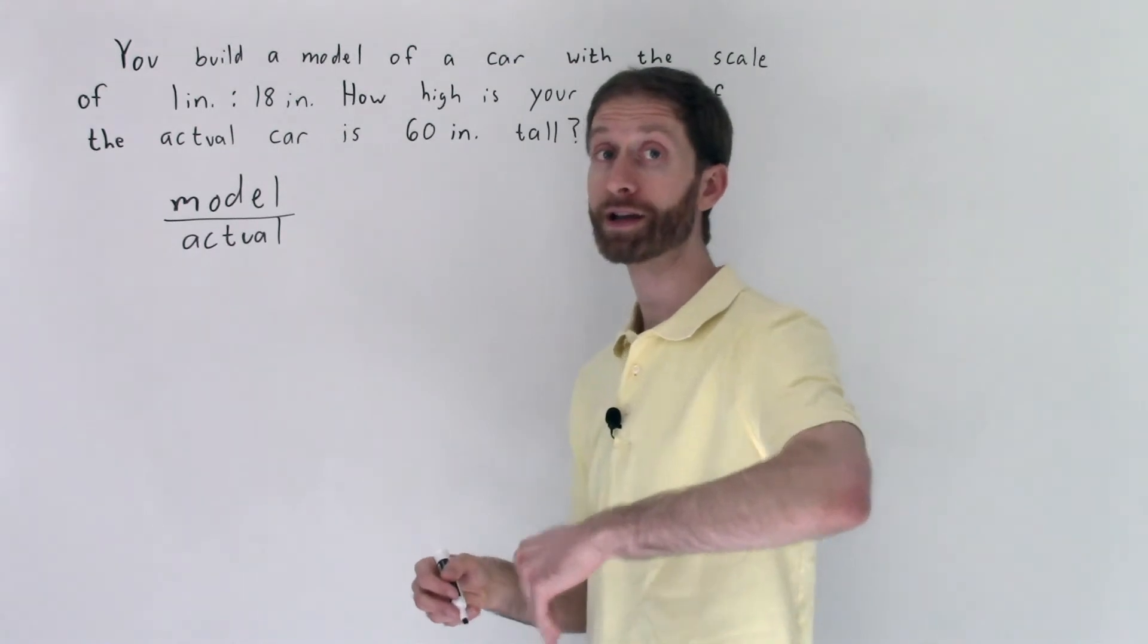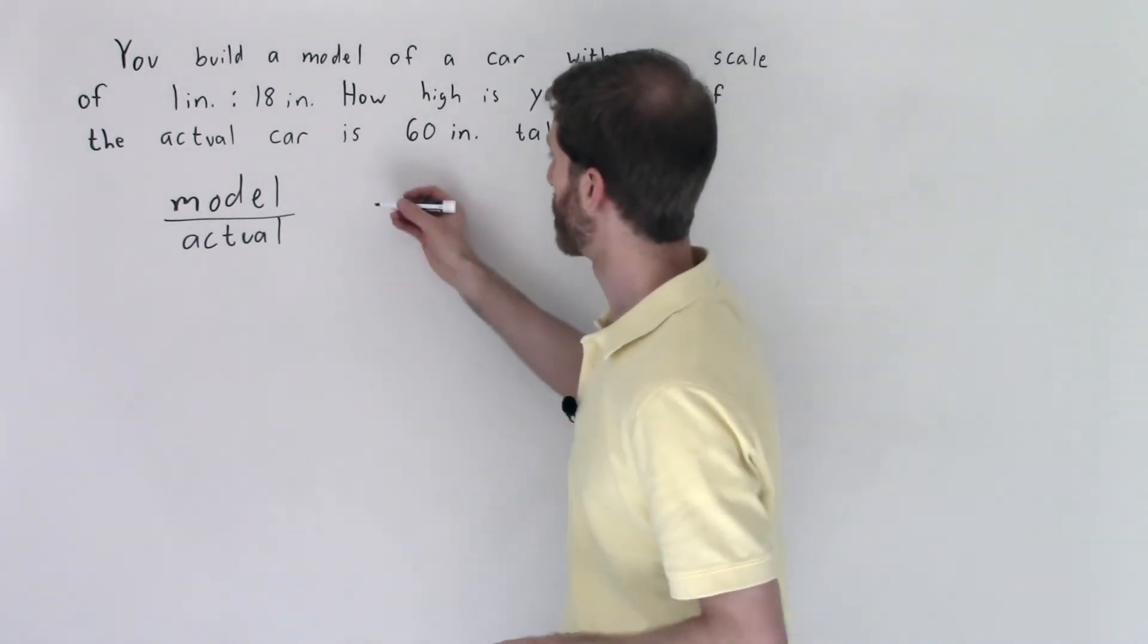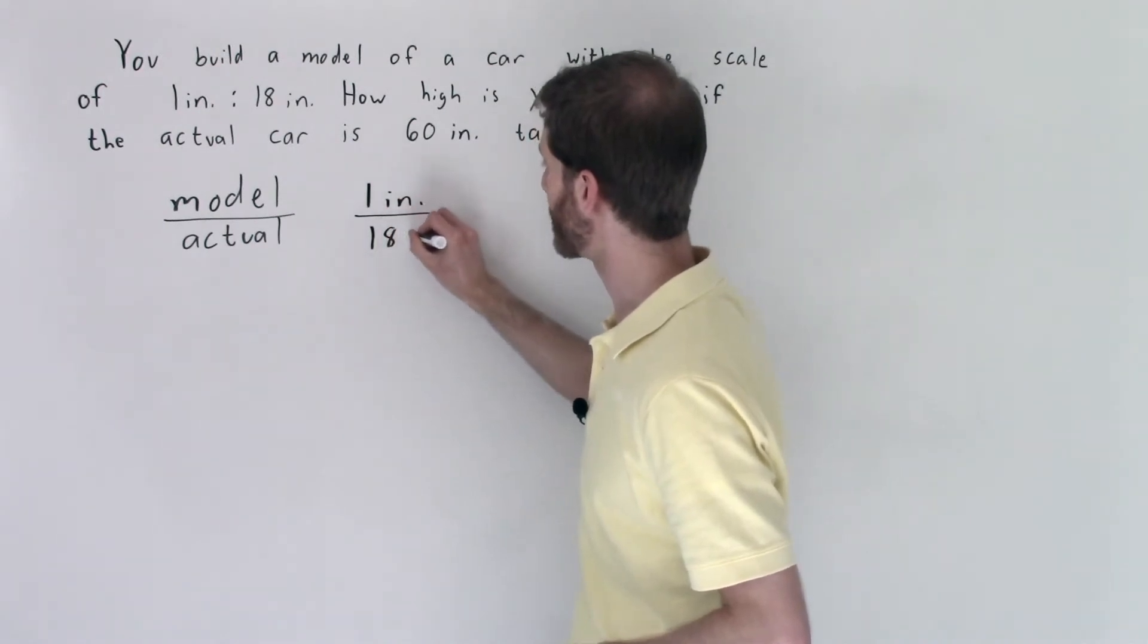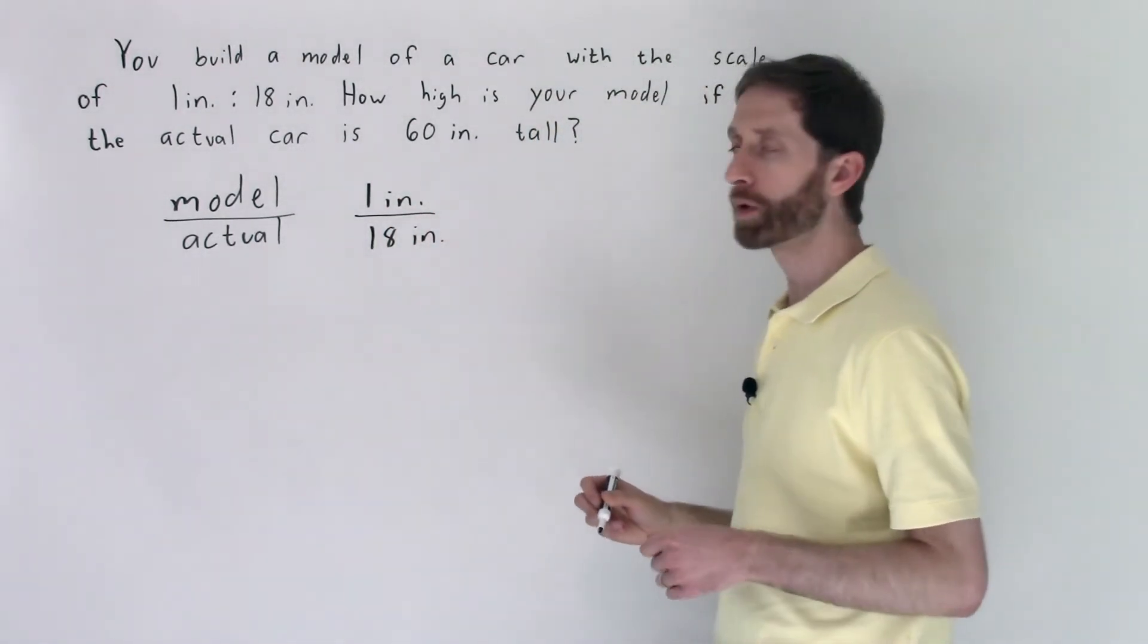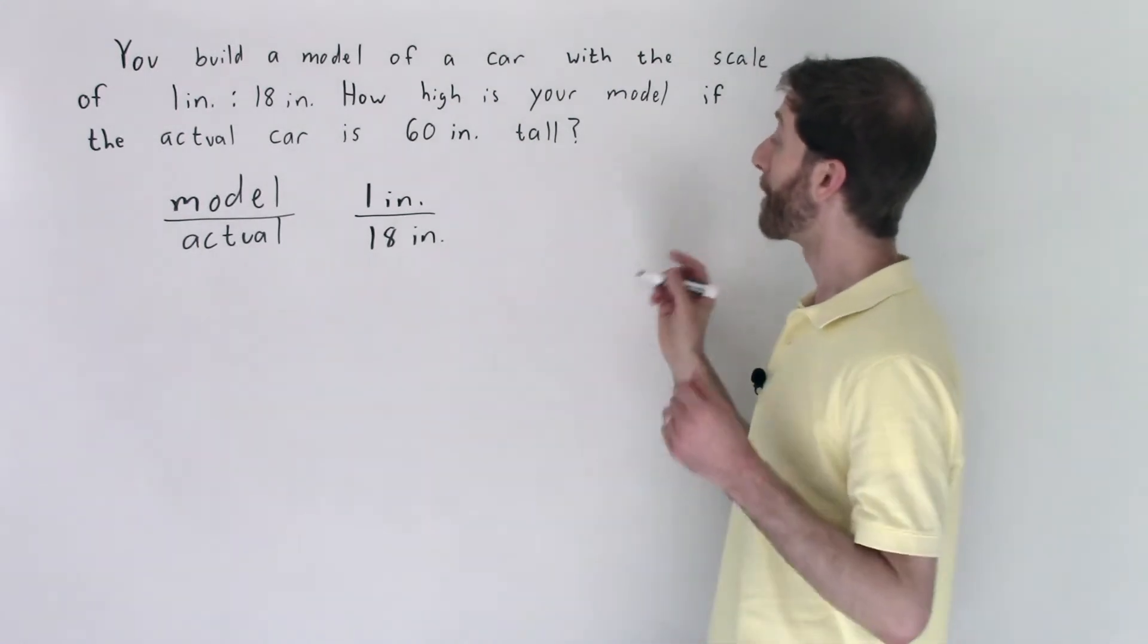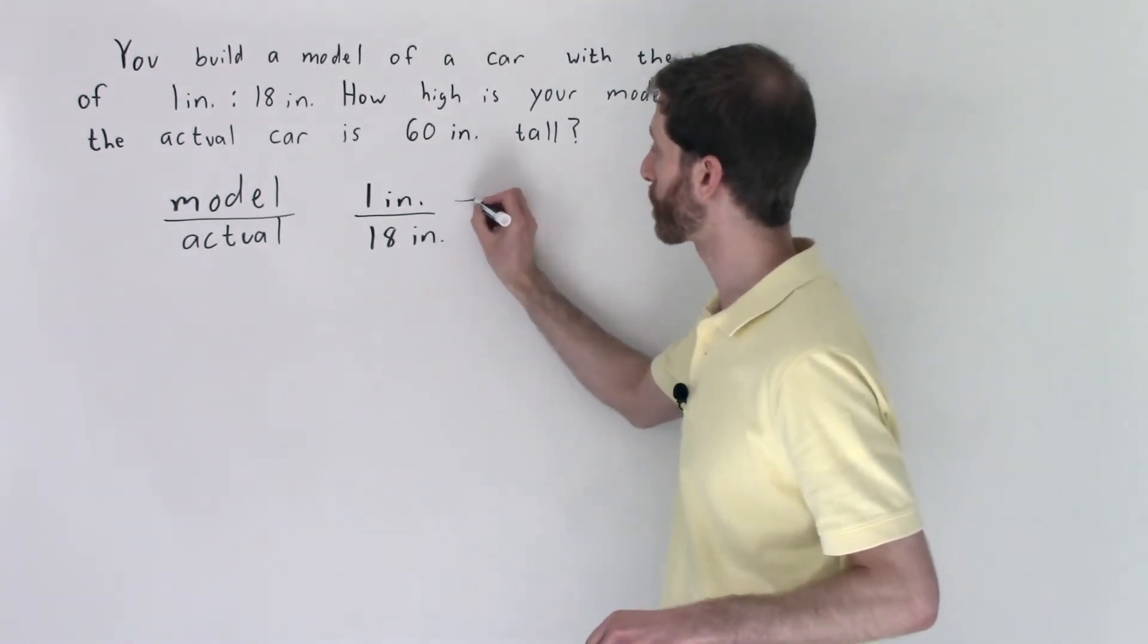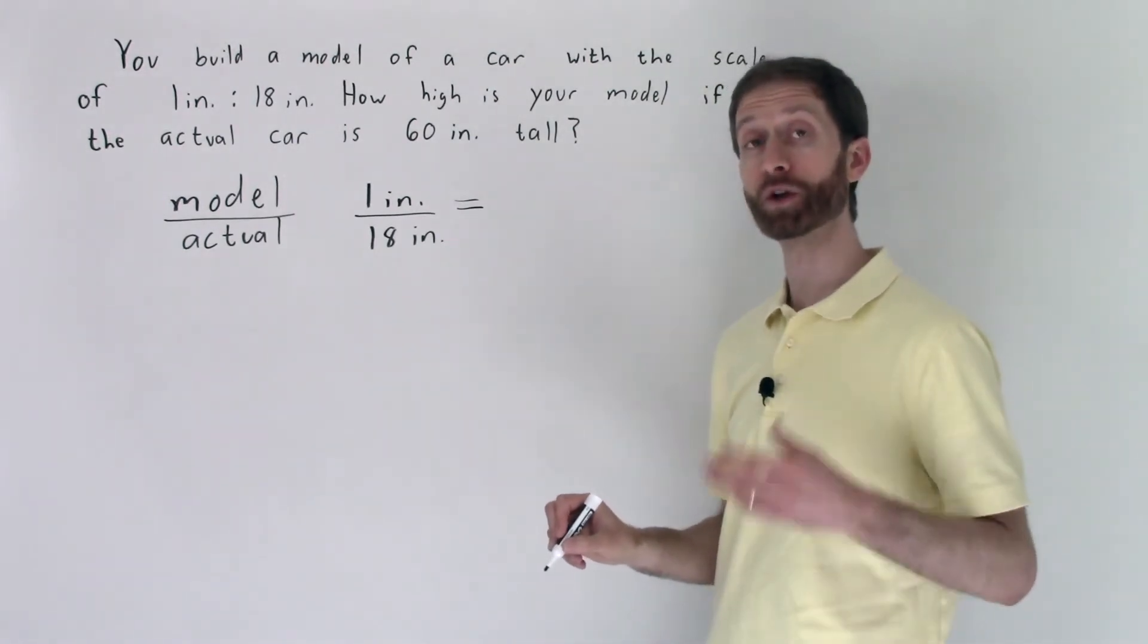So our model to actual ratio is given right here. We're told that we have one inch on the model to 18 inches on the actual, so we would have one inch compared to 18 inches, is that ratio that we're operating under. We want to know how high the model needs to be if the actual car is 60 inches.